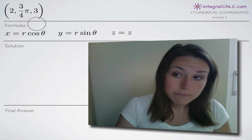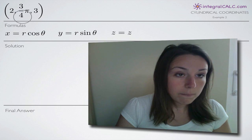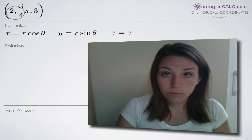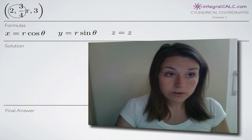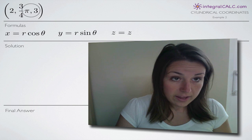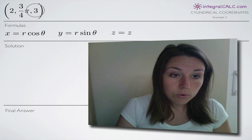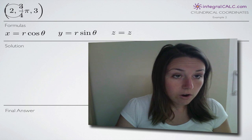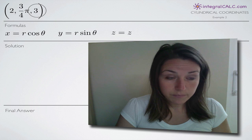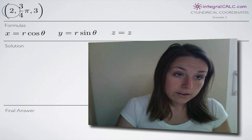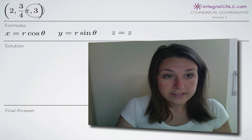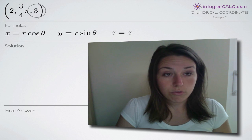Keep in mind that cylindrical coordinates, instead of x, y, and z like rectangular coordinates, use r, theta, and z. So r is 2, theta is 3π over 4, and z is 3.